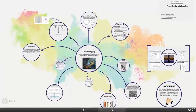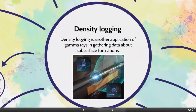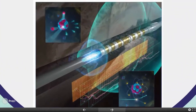Let's start. Density logging is another application of gamma rays in gathering data about subsurface formations. The formation density log measures the bulk density of the formation. The formation density tools are induced radiation tools — they bombard the formation with radiation and measure how much radiation returns to a sensor.